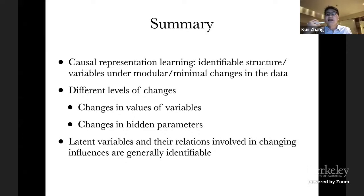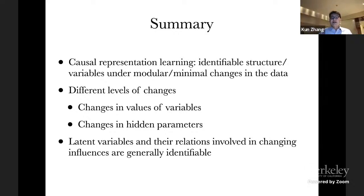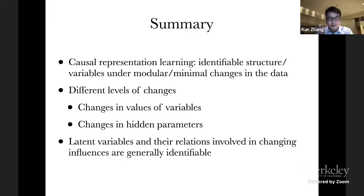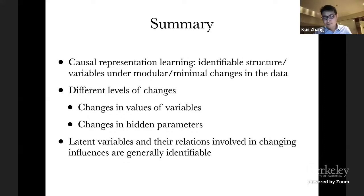We covered two levels of changes: changes in values of measured variables, or changes in hidden variables or hidden parameters. The rough take-home message is: latent causal variables and their relations involved in changing causal relations are generally identifiable. If the causal relations over latent variables do not change, we generally cannot recover those variables and can only consider them as background. But if they are involved in changing causal relations, we can locate and recover those variables together with the causal influences. Thank you very much — that's all for this talk. I would like to thank my collaborators including Clark, Peter, Bernard, Biwei, Kun, and Sean.